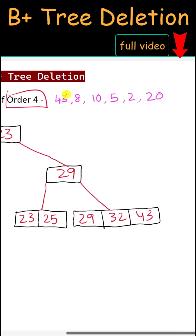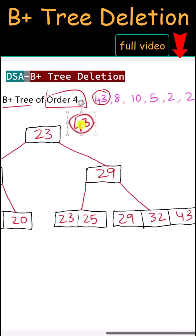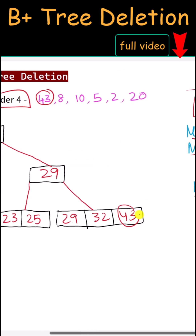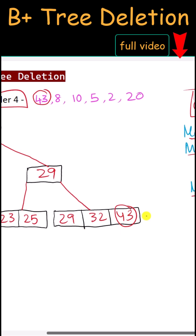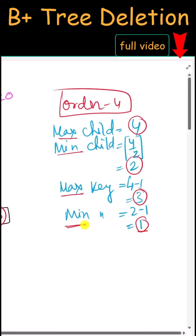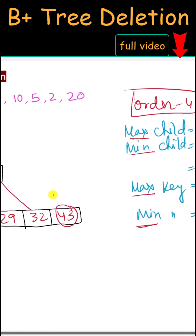First we delete 43. Since 43 is greater than 23, we go right. It's also greater than 29, so we go right again. We find 43 here, and since this node has more than the minimum number of keys, we can simply delete it.